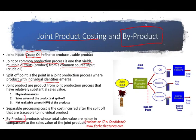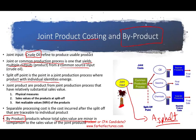We might also have something called a byproduct — a product whose total sales value is minor in comparison to the sales value of the joint products. For our oil example, I'm going to assume this is asphalt, which is what we lay on roads. I'm considering it a byproduct because it's what's left over from crude oil — what we cannot produce into oil, gasoline, chemical, and kerosene. The sales value of asphalt is minor relative to the other products, so that's how I'm treating it as a byproduct.